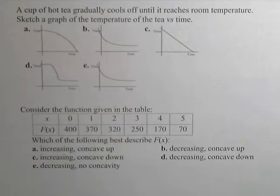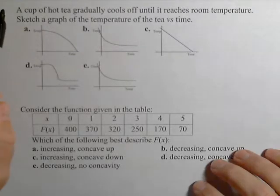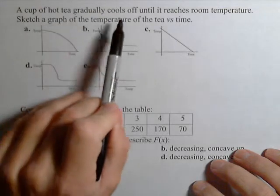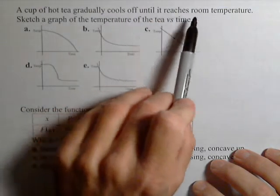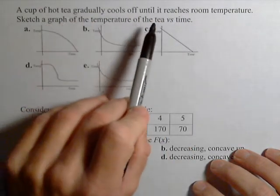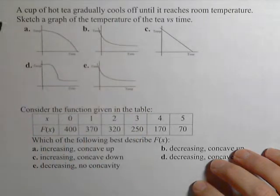In this video, we're exploring the shape of graphs. So in the first one, we have a cup of hot tea that gradually cools off until it reaches room temperature.